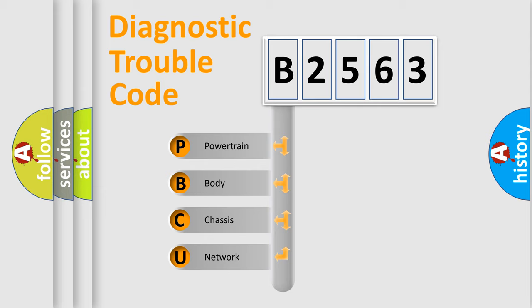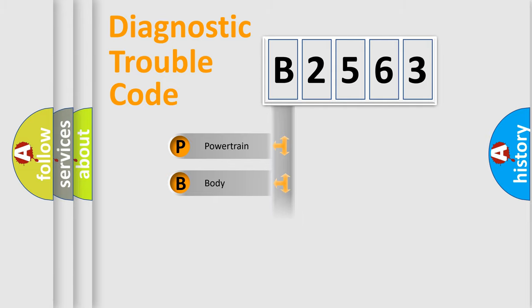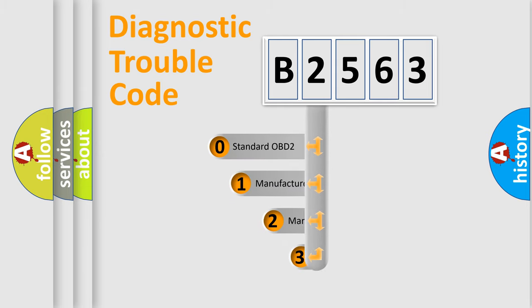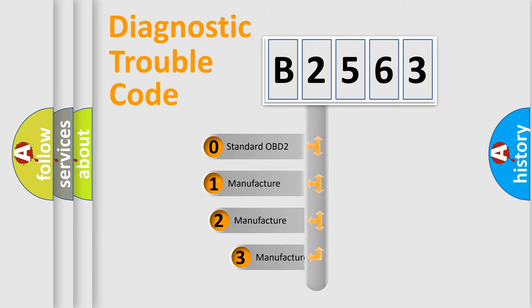We divide the electric system of an automobile into four basic units: Powertrain, Body, Chassis, and Network. This distribution is defined in the first character of the code.